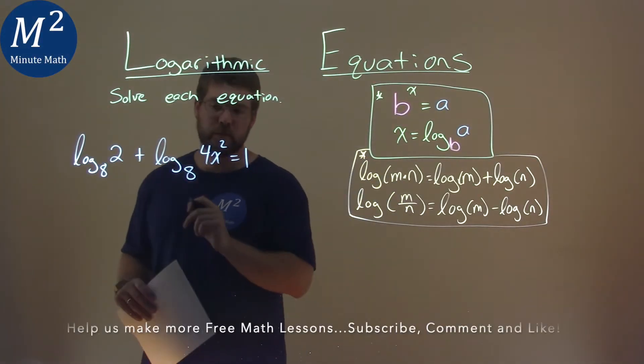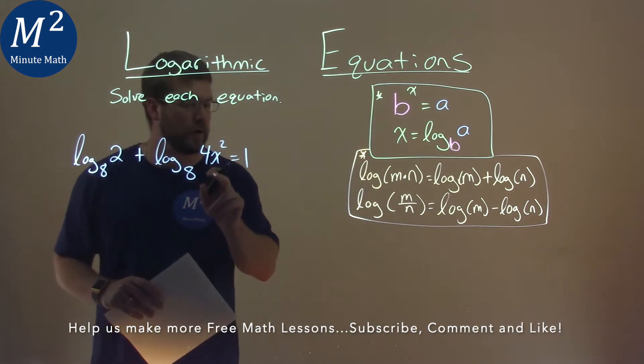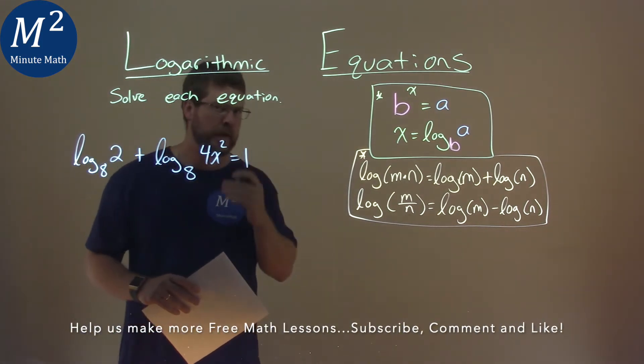Log base 8 of 2 plus log base 8 of 4x squared is equal to 1, and we've got to solve it.